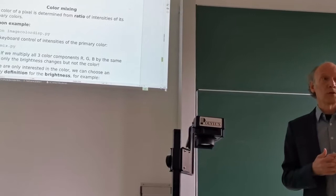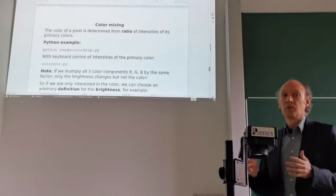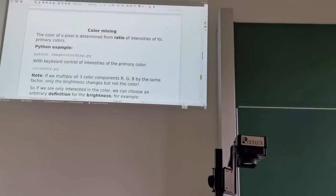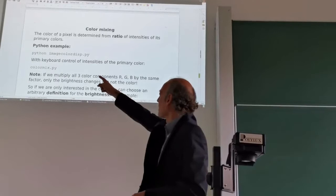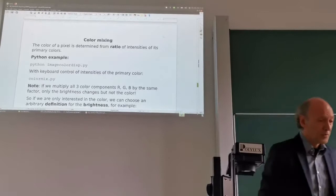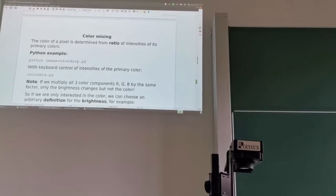This is also an important principle that we use for video coding. We can produce any color by mixing the primary colors according to certain factors. To show you this principle, I already have this little example called image color list, which basically shows you the principle.